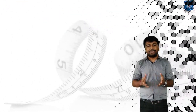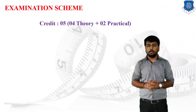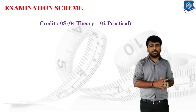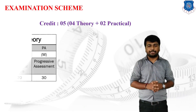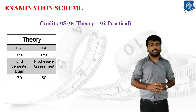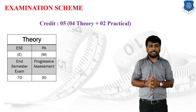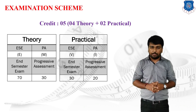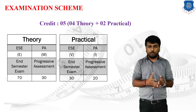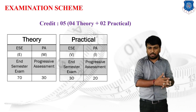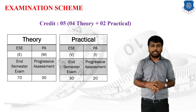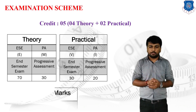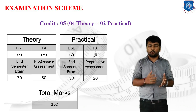Now we will discuss the basic examination scheme. This subject contains 5 credits — 4 for the theory section and 2 for the practical section. In theory, the end semester exam contains 70 marks taken by Gujarat Technological University, and the progressive assessment contains 30 marks taken by the institute. For the practical assessment, the viva section at end semester contains 30 marks and the internal practical examination contains 20 marks, making the total subject marks 150.